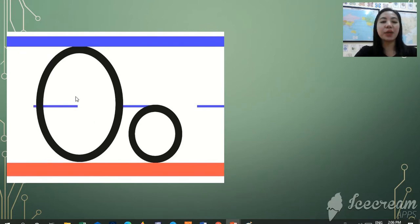So this is the uppercase O and the lowercase O and the sound of letter O is O. O. O. Can you repeat it after me again?